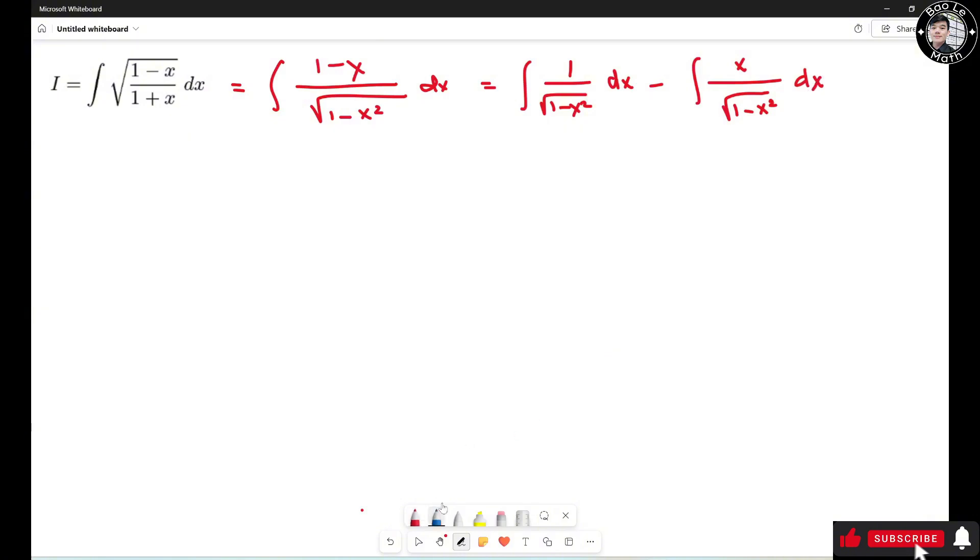Now I'm going to call this one I1. I call this one I2. So I1 is very easy. That is the formula. It could be sine inverse of x plus c1.